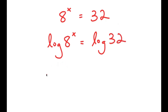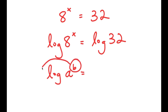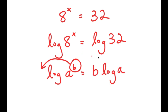Now, if I have something in the form log of a to the power of b, I can move b to the front of the logarithm. So this turns into b times log a. So log a to the power of b is equal to b times log a.